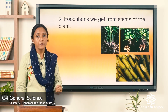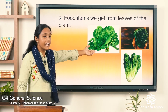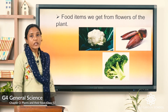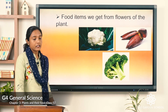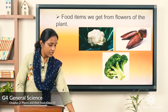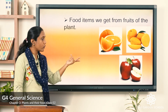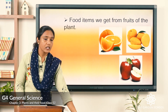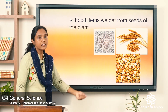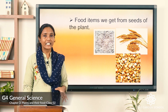From leaves we get spinach, cabbage, and lettuce. From flowers we get cauliflower, banana blossom, and broccoli. From fruits we get orange, mango, and apple. From seeds we get rice, wheat, dal, and other grains. All of these are used in our daily diets.